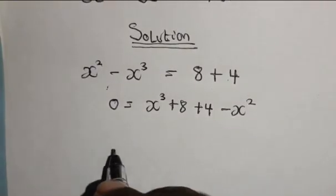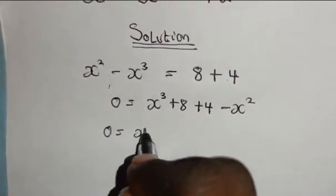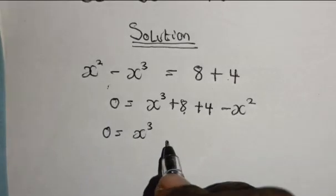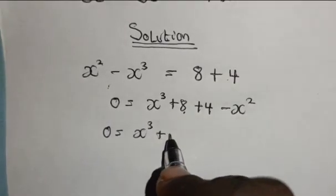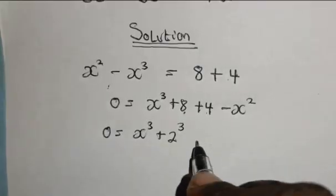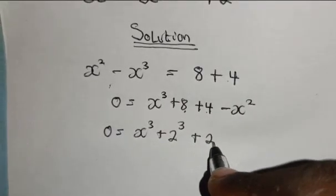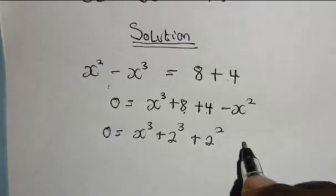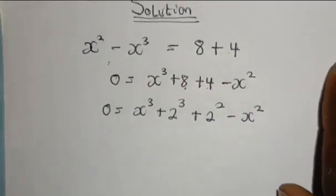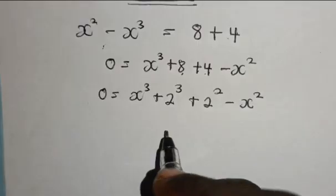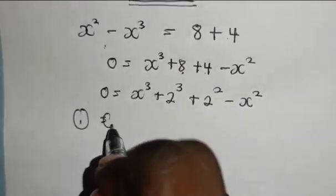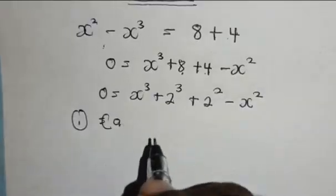We have 0 equals s raised to the power of 3, which we can write as plus 2 raised to the power of 3. So here we can write 2 as plus 2 raised to the power of 2, minus s squared. Now we'll be recalling two properties.